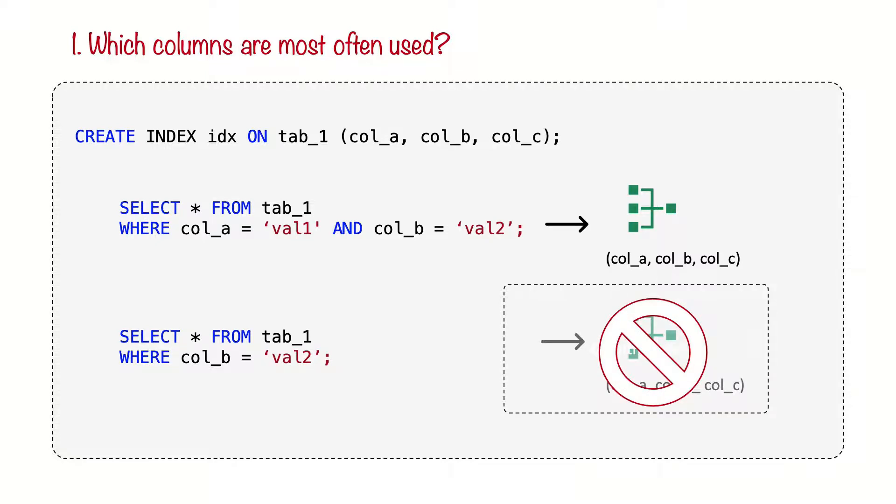In some cases, it can be necessary to add more than one index for the same columns, where the column order differ between the indexes. These are called redundant indexes, and we'll check when it makes sense to add them in the next section.